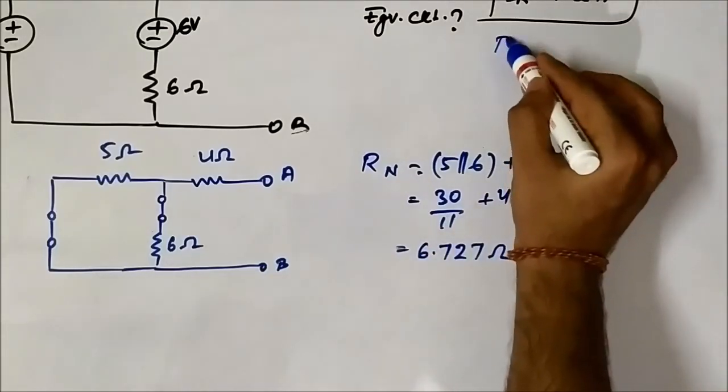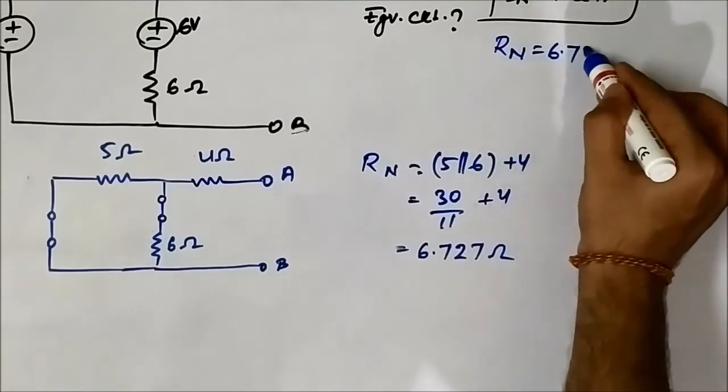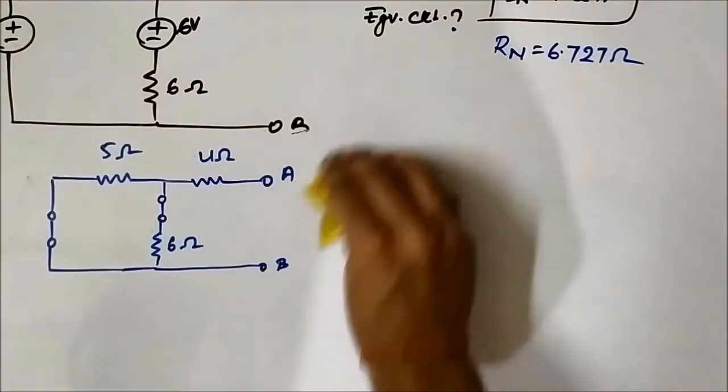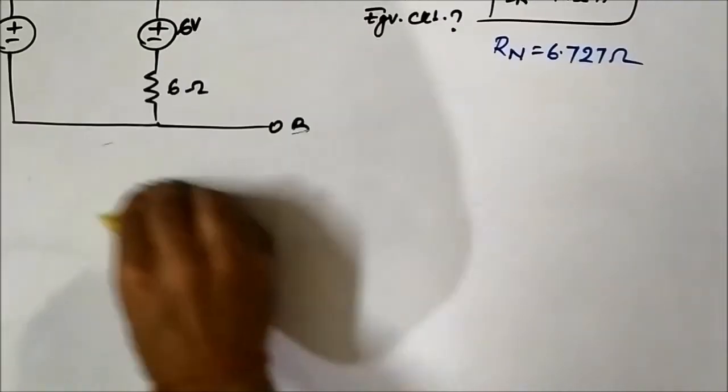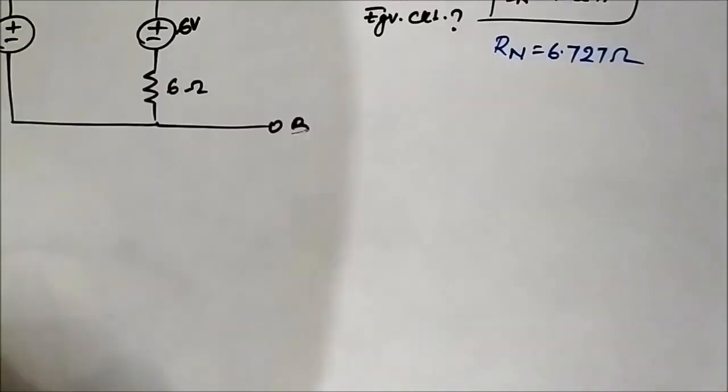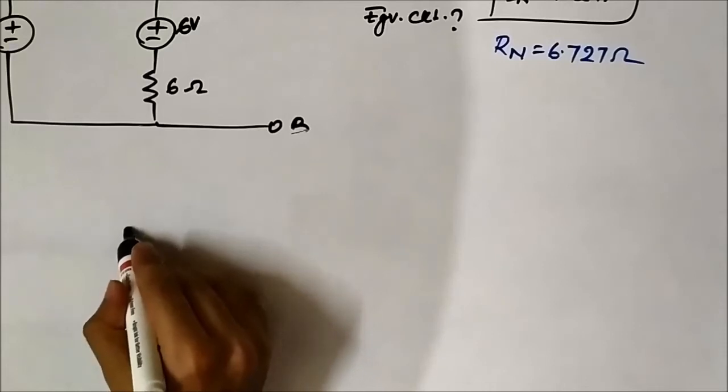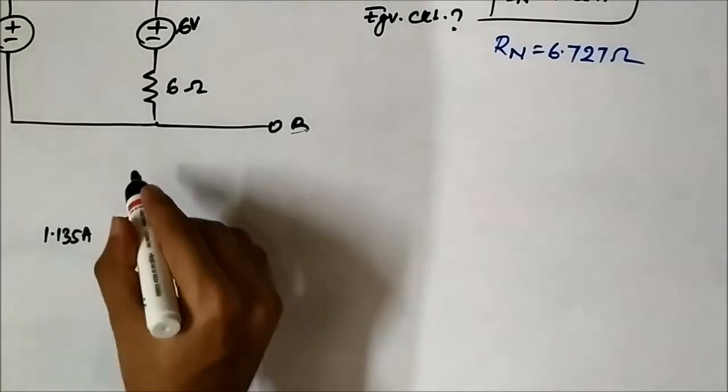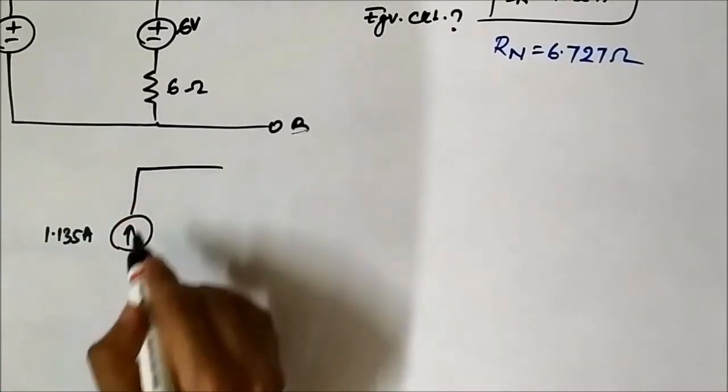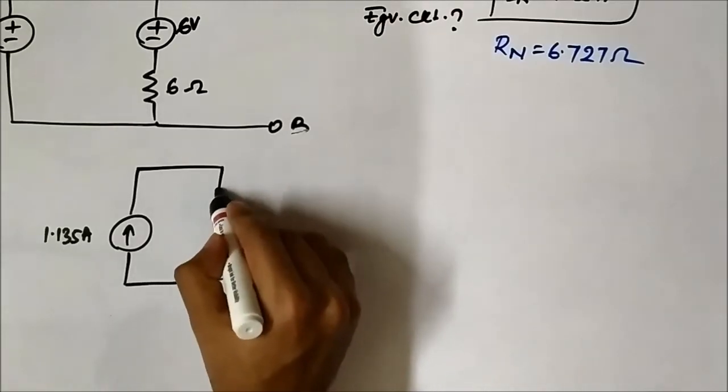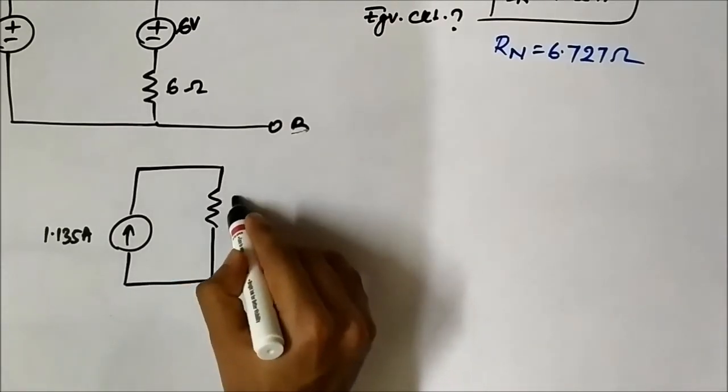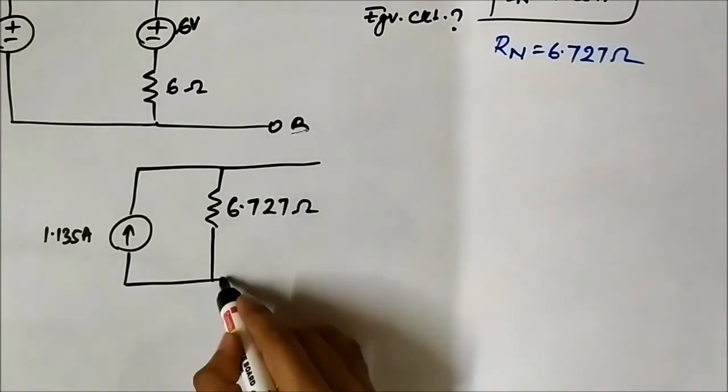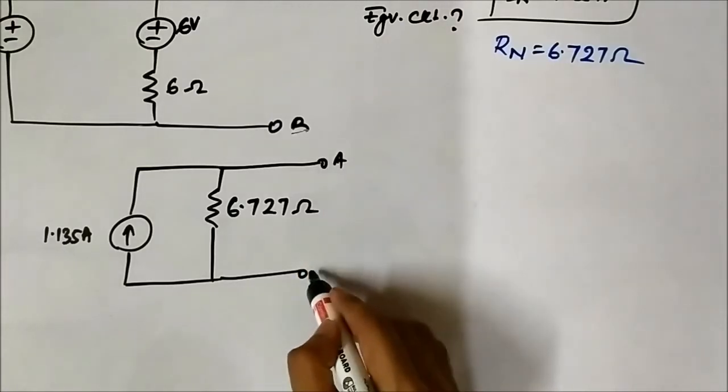We can draw the Norton equivalent circuit as 1.135 ampere and 6.727 ohm. This is the Norton equivalent circuit.